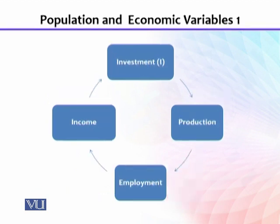Similar will be the case with investment. When some people do business or invest, production increases, and to meet or expand that production, some people get employment. Their income increases, which leads to further consumption. Increased consumption increases demand for goods and services, which leads to further investment, production, employment, and income generation. This circle means that spending, investment, and government expenditures multiply the level of national income several times.